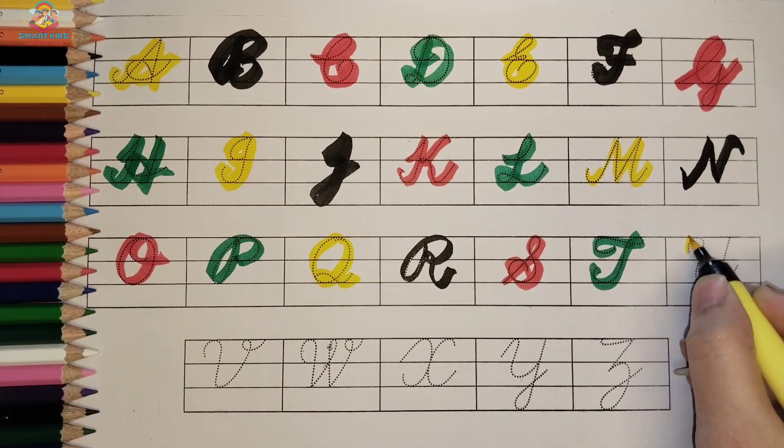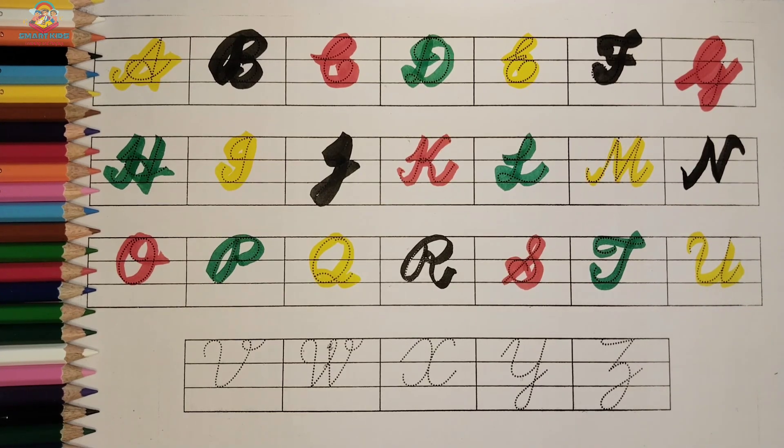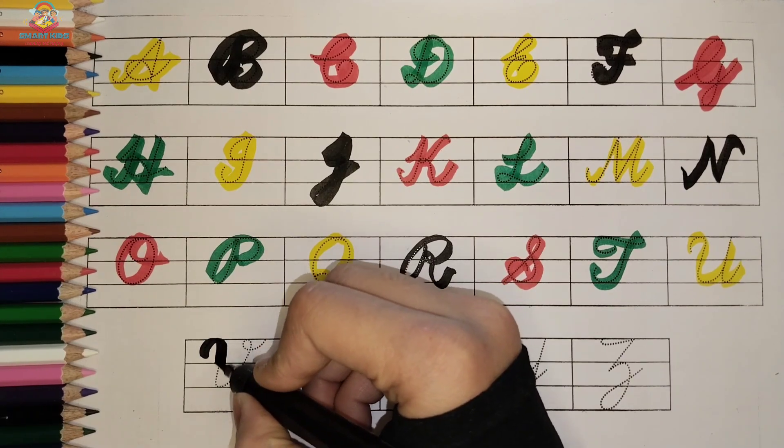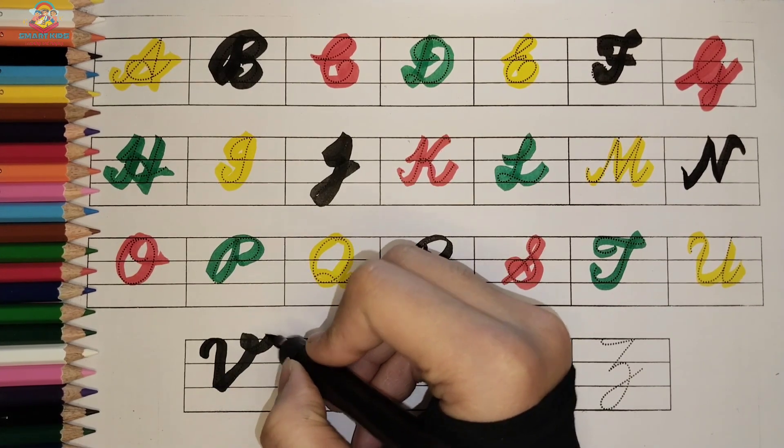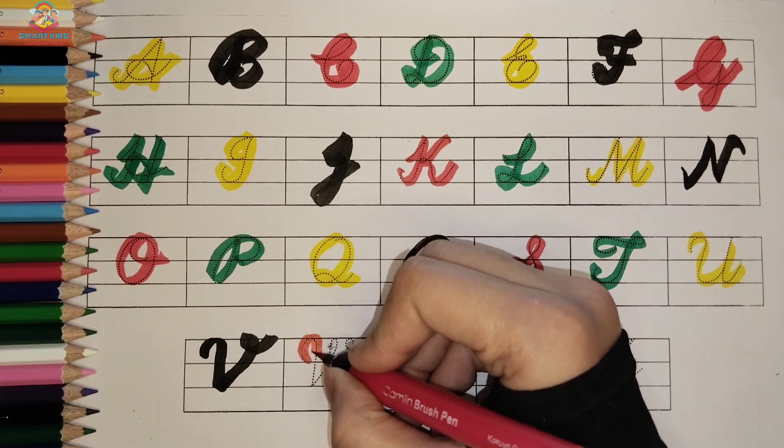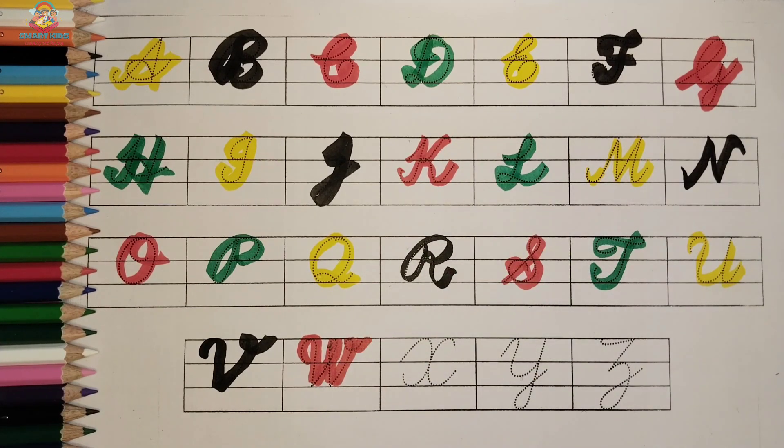U, U for Umbrella, U for Umbrella, yellow color. V, V for Van, V for Van, black color. W, W for Watch, W for Watch, red color.